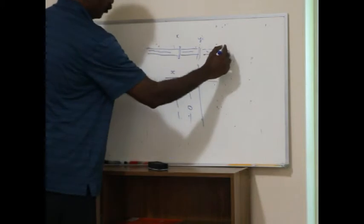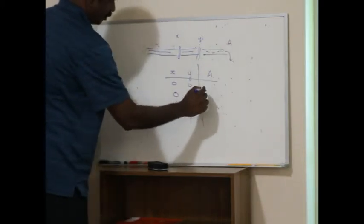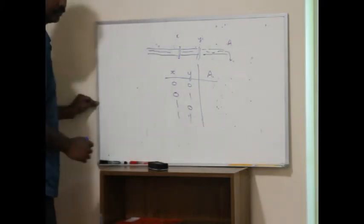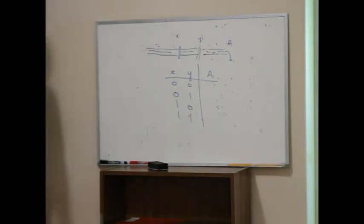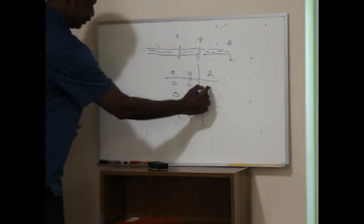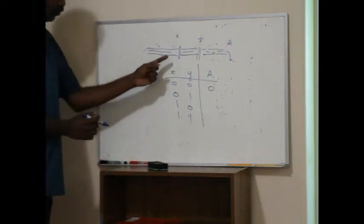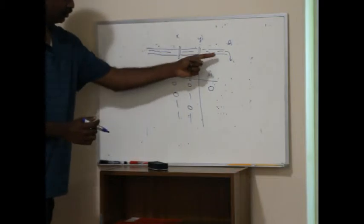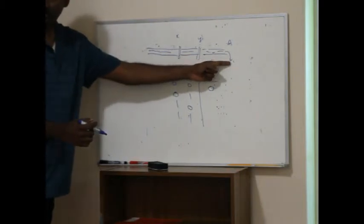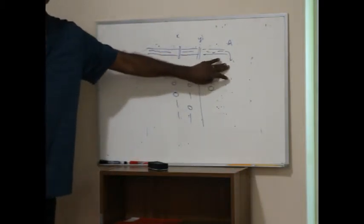Now let's say this is the output — I call it A. If both are zero, that means both are closed, so there's no water — zero means no water. One means there is water.